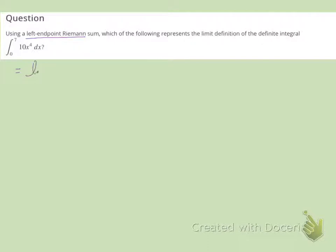So by definition, our left endpoint Riemann sum is the limit as n goes to infinity of the sum from i equals 1 to n of f sub x sub i minus 1 times delta x.